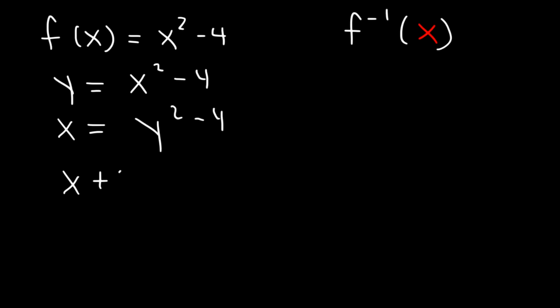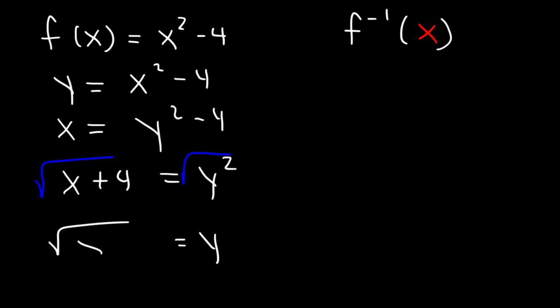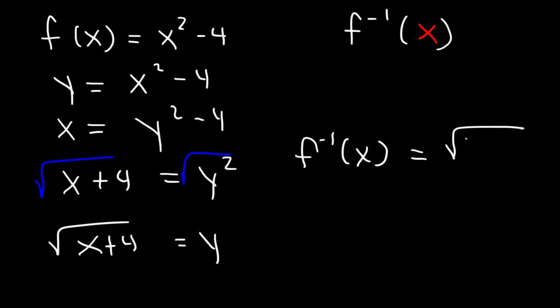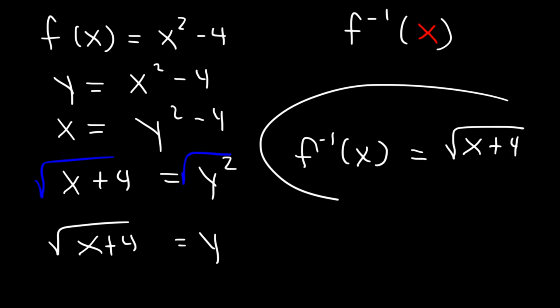So let's add 4 to both sides. And then let's take the square root of both sides. The inverse function is the square root of x plus 4. Don't forget to add plus or minus, since we took the square root of both sides.